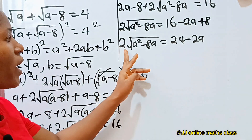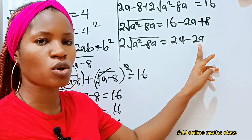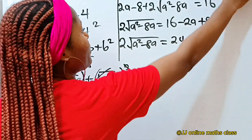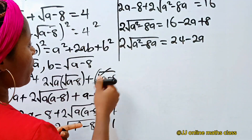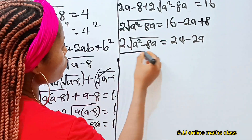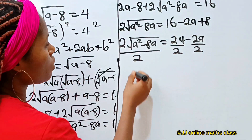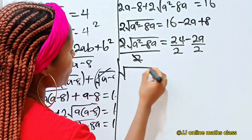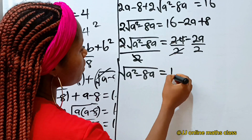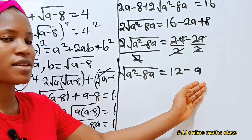Now notice that 2 is a factor of both 24 and 2a, so let's divide through by 2 to simplify this equation. Dividing every term by 2, we get: square root of a squared minus 8a is equal to 12 minus a. Now we have a simpler equation.